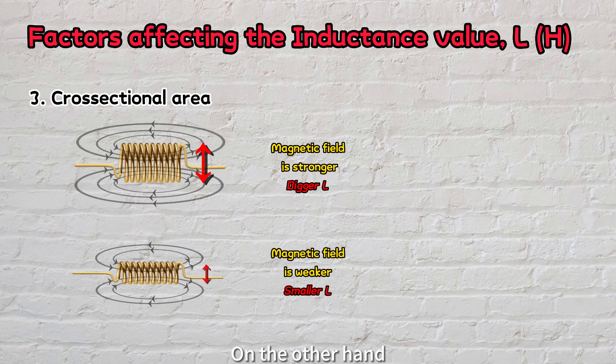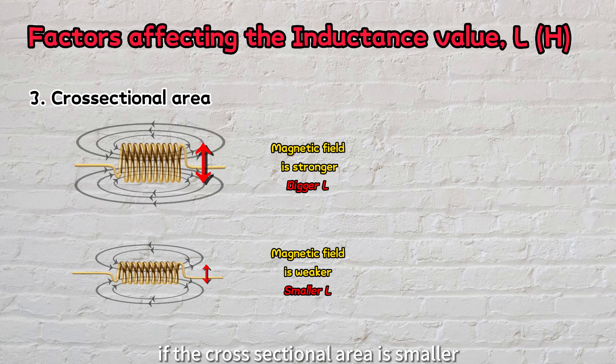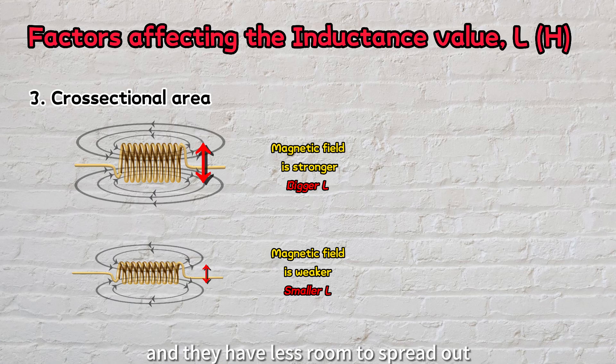On the other hand, if the cross-sectional area is smaller, the magnetic field lines are more constrained, and they have less room to spread out. This restriction limits the amount of magnetic energy that can be stored, resulting in lower inductance.